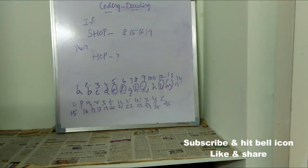8 15 16 19, so we surely need to take the help of numbers in order to decode this. If SHOP is written as 8 15 16 19, now let's try to decode it.